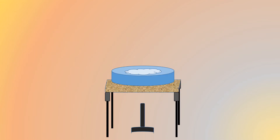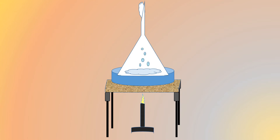An ammonium chloride and salt mixture is taken and covered with a funnel, which is closed with a cotton plug. The burner is lit and when the mixture is heated, the ammonium chloride vaporizes. After cooling, it settles down inside the funnel as a solid, and this is how we can separate both components.